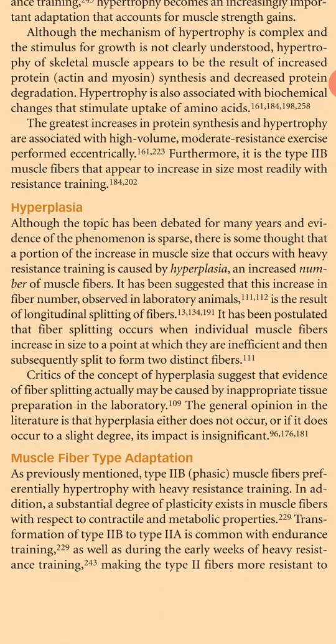Hyperplasia. Although the topic has been debated for many years and evidence of the phenomenon is sparse, there is some thought that a portion of the increase in muscle size that occurs with heavy resistance training is caused by hyperplasia — an increased number of muscle fibers. It has been suggested that this increase in fiber number observed in laboratory animals is a result of longitudinal splitting of fibers, occurring when individual muscle fibers increase in size to a point at which they are inefficient and then subsequently split to form two distinct fibers. Critics suggest that evidence of fiber splitting may be caused by inappropriate tissue preparation in the laboratory.